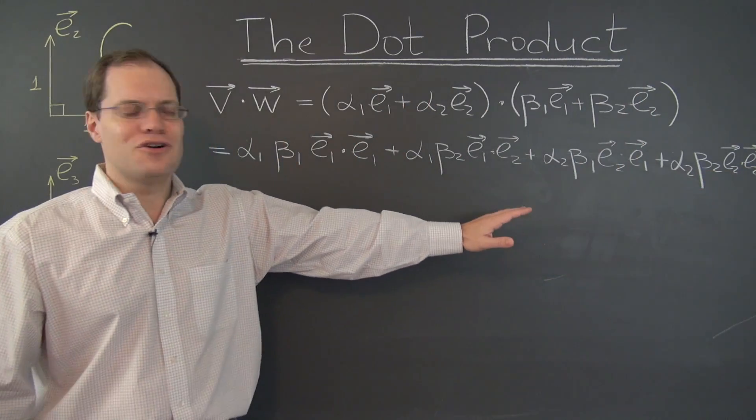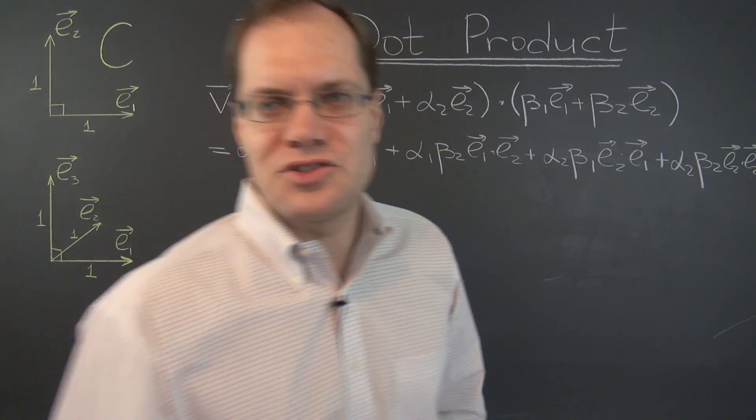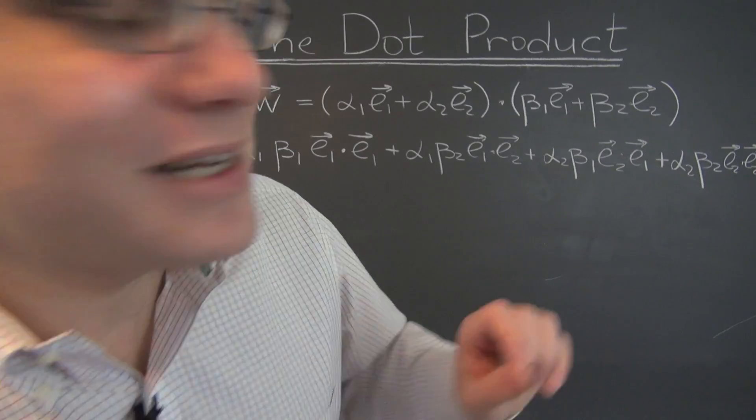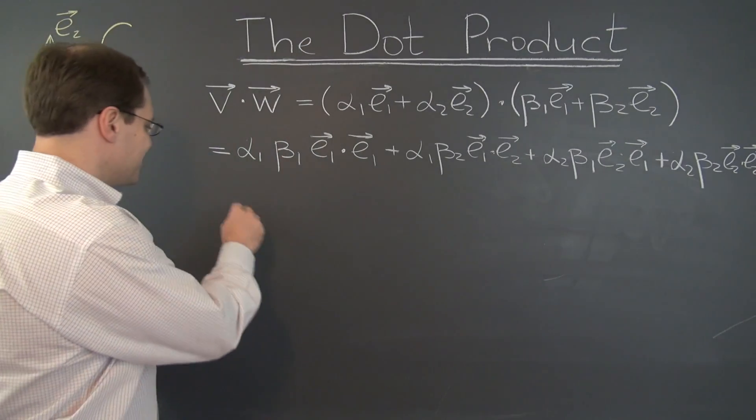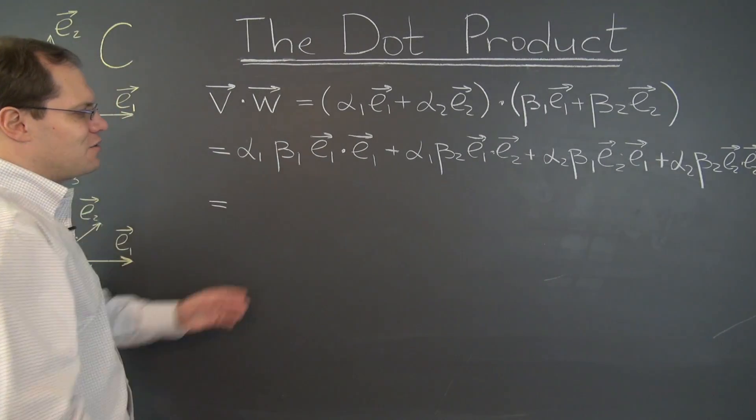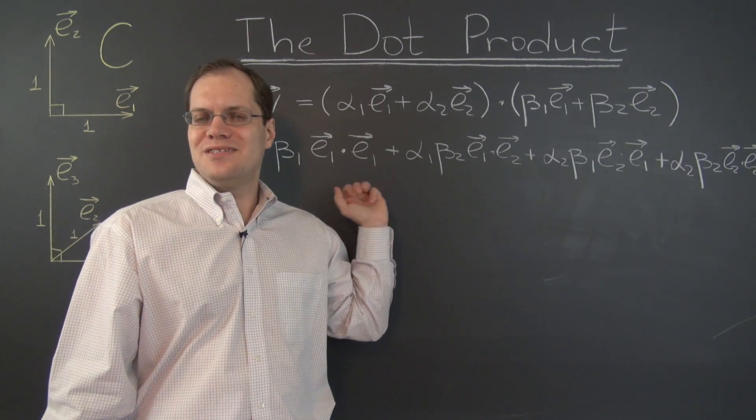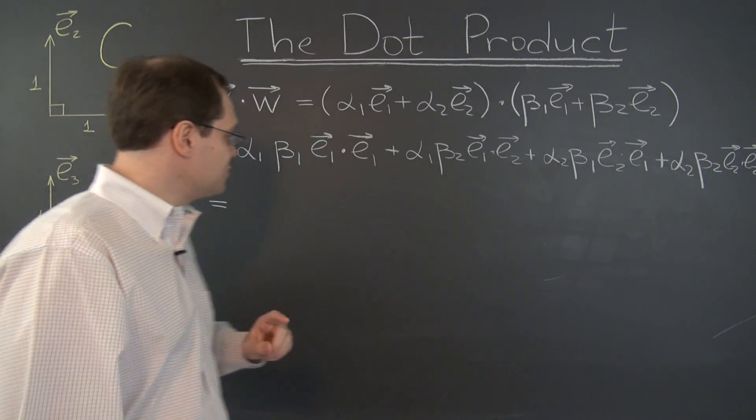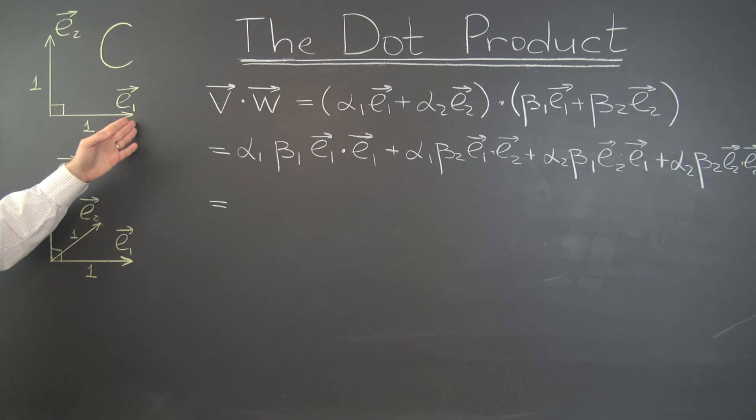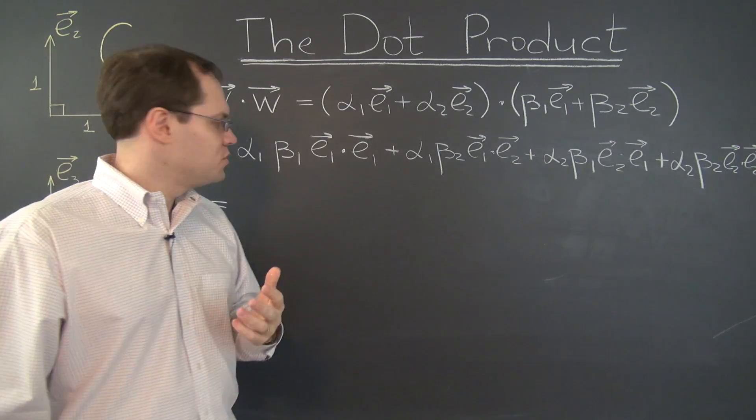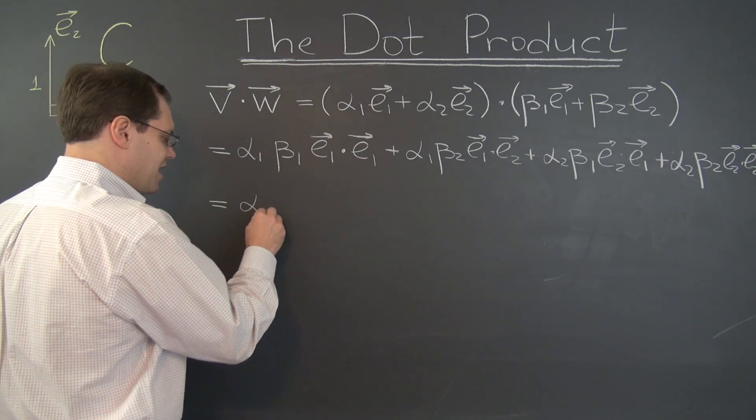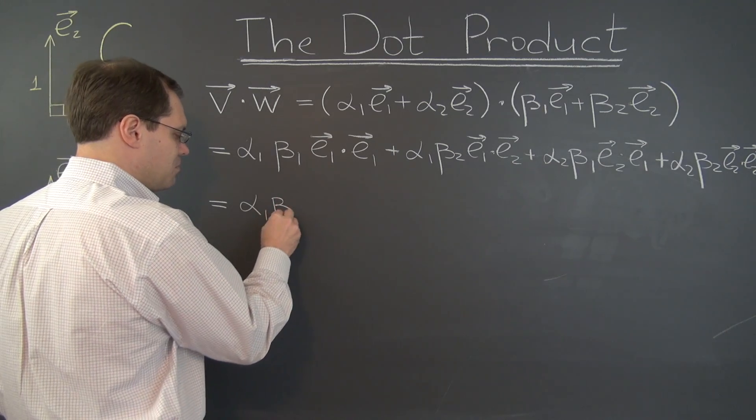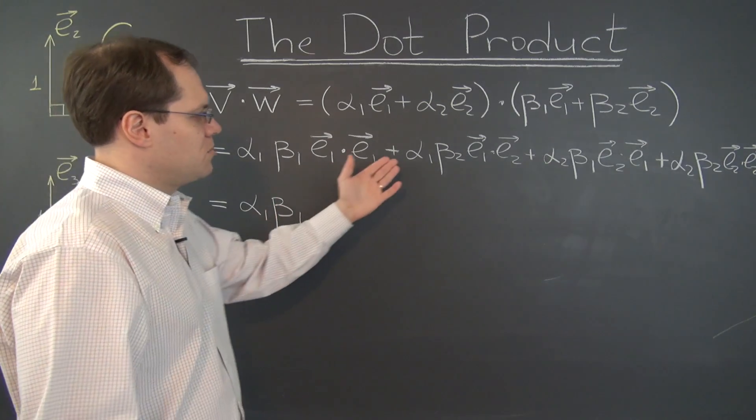Even if it doesn't fit, you know what's here. Alpha 2 beta 2 times E2 dotted with E2. It's there. Barely. Now, what is E1 dotted with E1? Well, let's just use the definition. E1 dotted with E1. It's 1 times 1, the length, times the angle between... plus this term, plus this term.